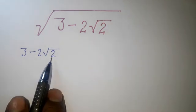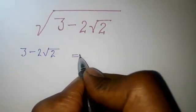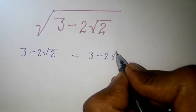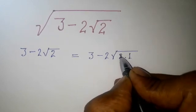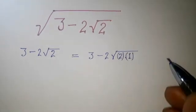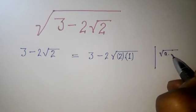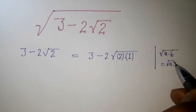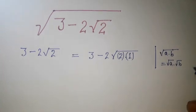We'll write 2 as root under 2 into 1. And we know that if something is inside the root, like root under a and b, we can write this as separate: root a and root b. We are going to get benefit from here.